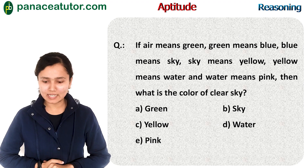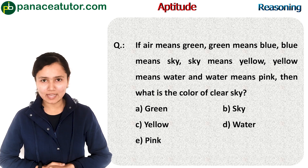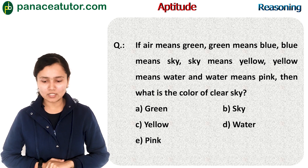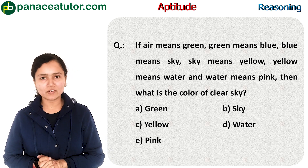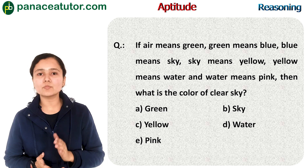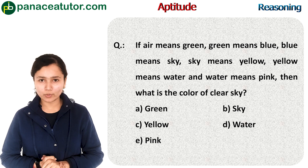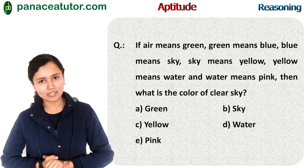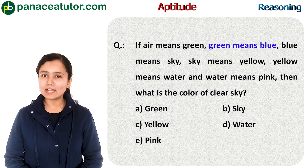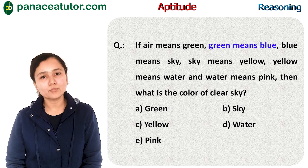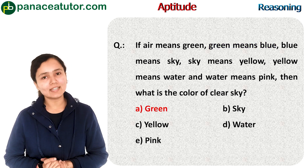Next question: If air means green, green means blue, blue means sky, sky means yellow, yellow means water, golden means pink — then what is the colour of the clear sky? This question is based on 'means', so we move in reverse direction. We know the colour of the sky is blue, and in the question it is written 'green means blue'. So our answer is the first one: green. That is option A.